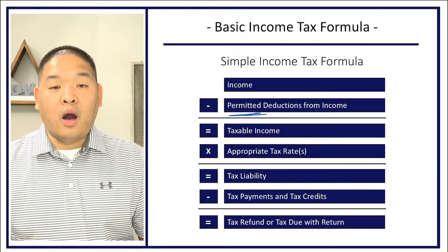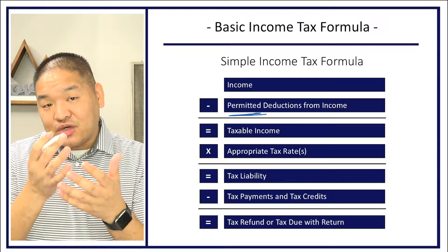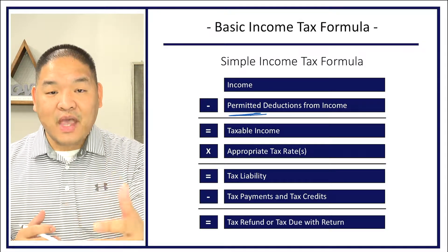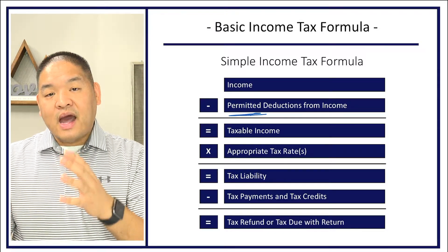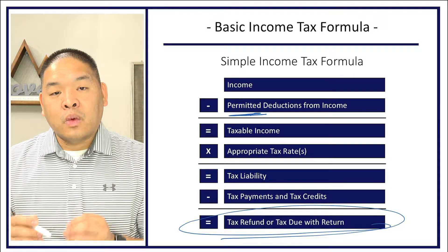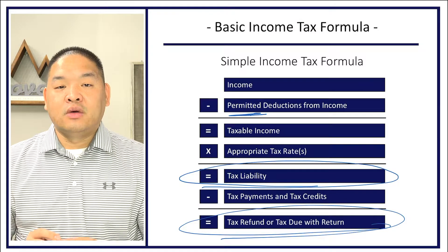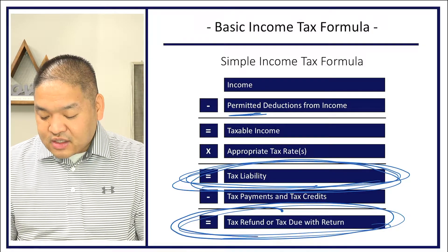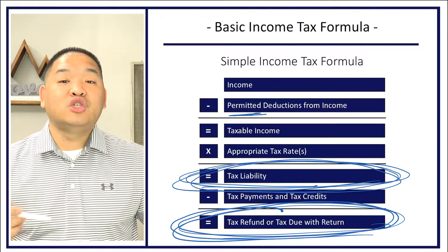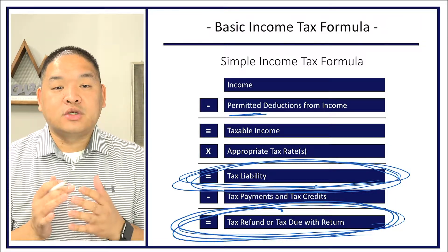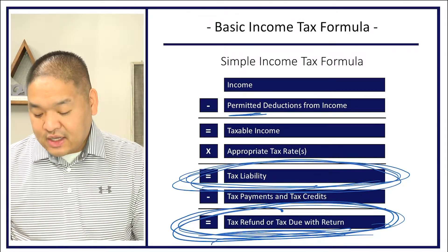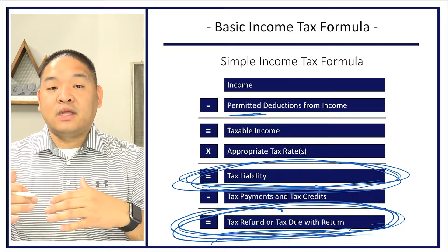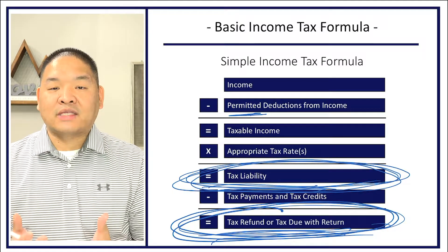Once we've done that, we get our tax refund or tax due on our return. Technically speaking, the tax liability is your tax. But because our employers pay the government our tax early, because we make estimated tax payments, and because we're given these credits, a lot of times many people associate their taxes with this final refund or amount due — when it really should be about the tax liability number. This tax liability is really what your taxes are. The refund or tax due is what you still need to pay or what you're getting back because you overpaid during the year. Most taxpayers don't understand how tax law works, so they think what they're getting back or paying at the end of the year is their tax number — and that's simply not the case.